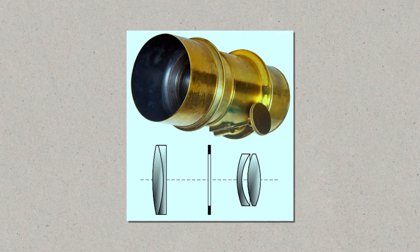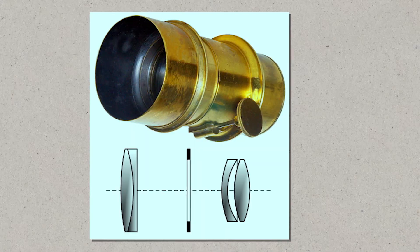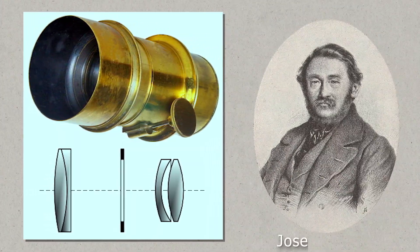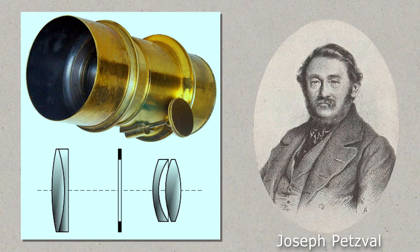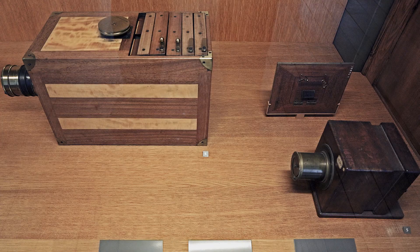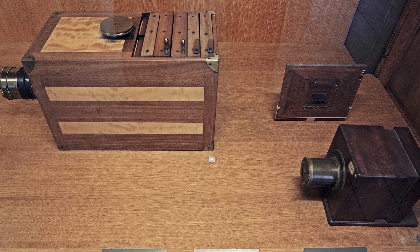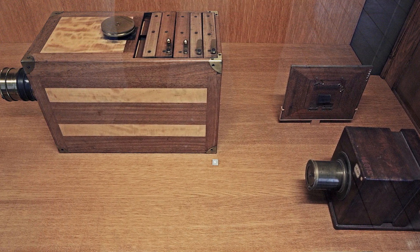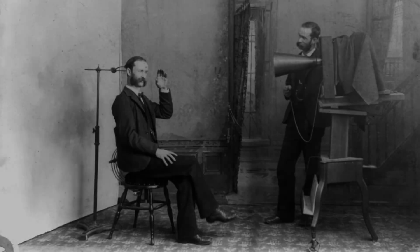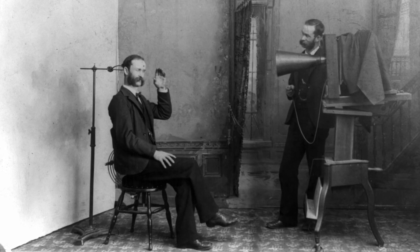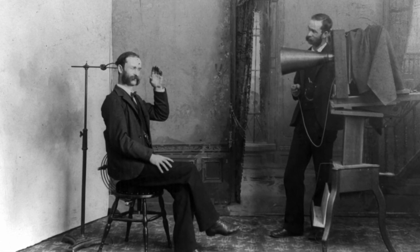At the same time, advancements in lens technology were crucial to improving the quality and clarity of photographic images. Pioneers like Joseph Petzval developed lenses specifically designed for portraiture, addressing the limitations of earlier optics. The Camera Obscura kept influencing the design of early cameras, with inventors integrating lens systems to focus light onto light-sensitive materials, creating sharper and more detailed images. All these advancements allowed camera technology to continue evolving as a tool for both artistic expression and scientific documentation.